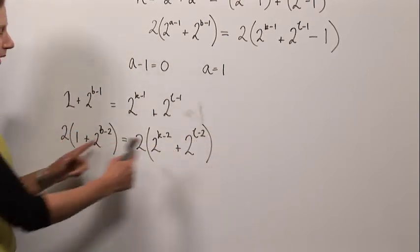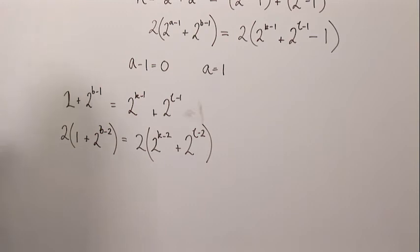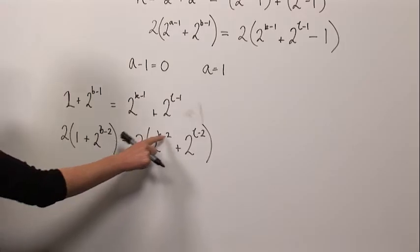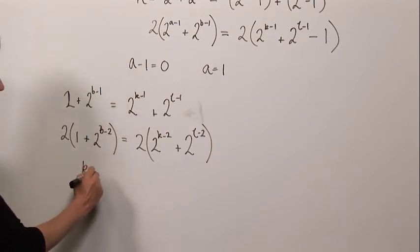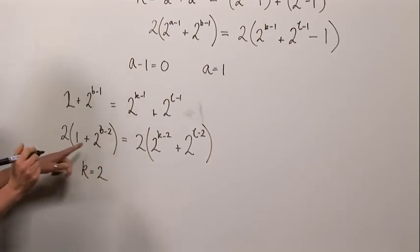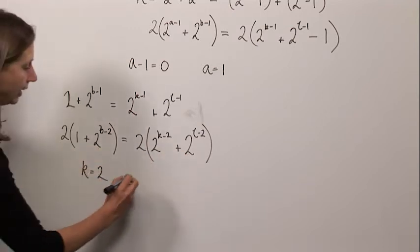And we know that these two brackets are now equal. And that tells us, just as before, that k minus two must be zero. So we get that k is equal to two, moreover, we get that b must be equal to l.